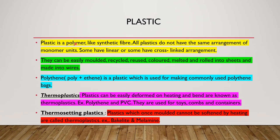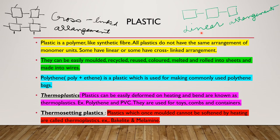Plastic is a polymer like synthetic fiber. All plastics do not have the same arrangement of monomer units. Some have linear and some have cross-linked arrangement. They can be easily molded, recycled, reused, colored, melted and rolled into sheets and made into wires.